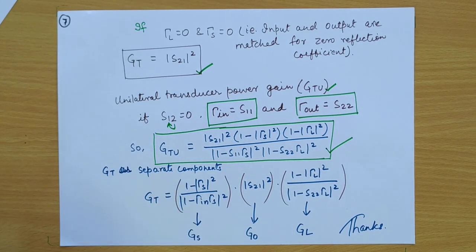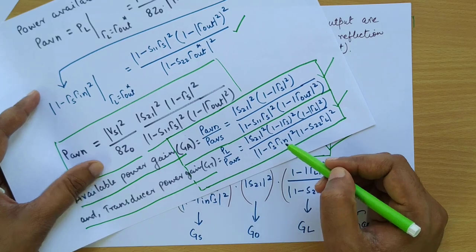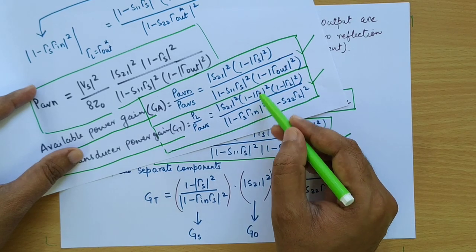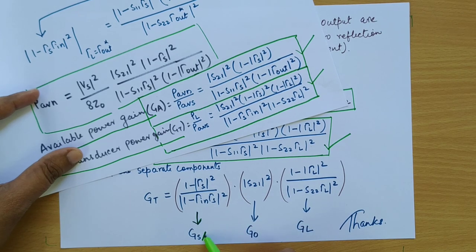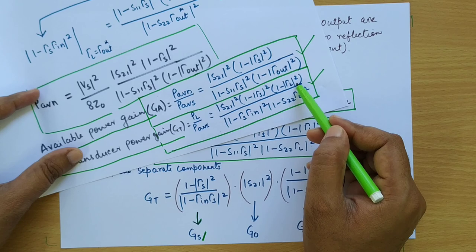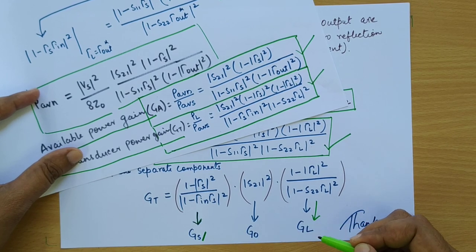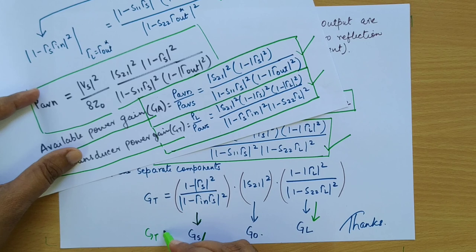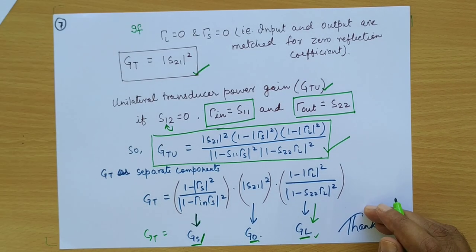We can write the GT transducer power gain expression in three separate components. The first is (1 minus |gamma_S|²) divided by |1 minus gamma_S·gamma_in|², which is the source property — the source gain. The second is (1 minus |gamma_L|²) divided by |1 minus S22·gamma_L|², which is the load property — the load gain. The third is |S21|², the transistor gain. So GT is the multiplication of source power gain, transistor power gain, and load power gain.